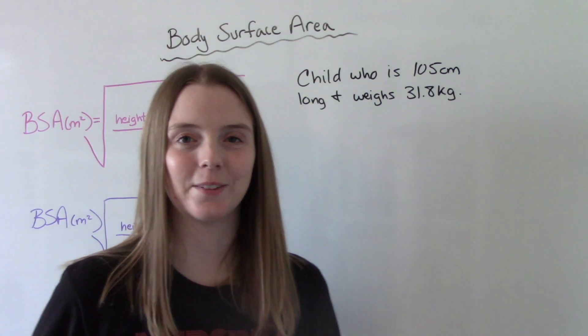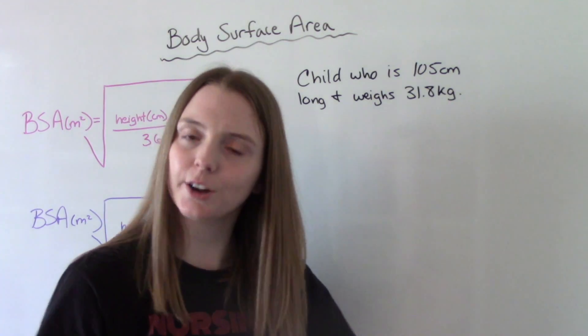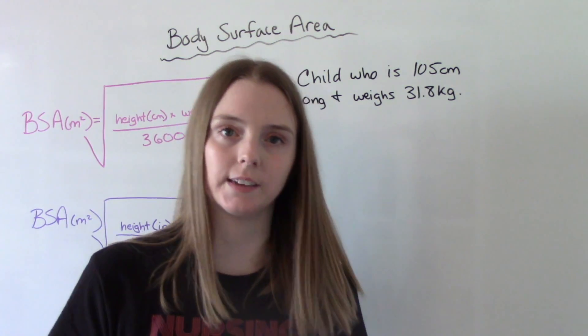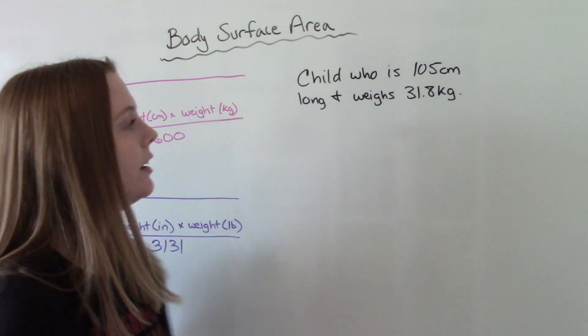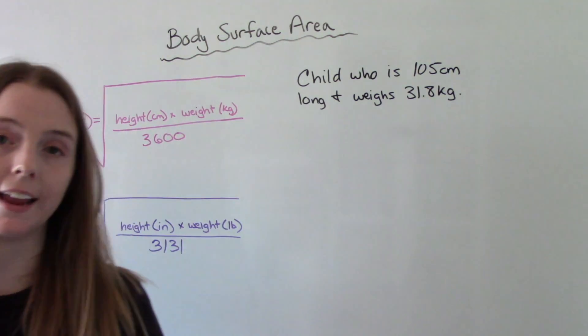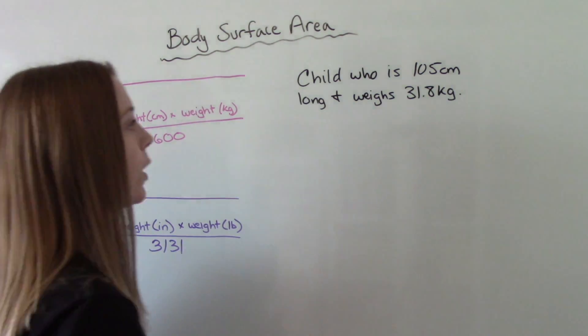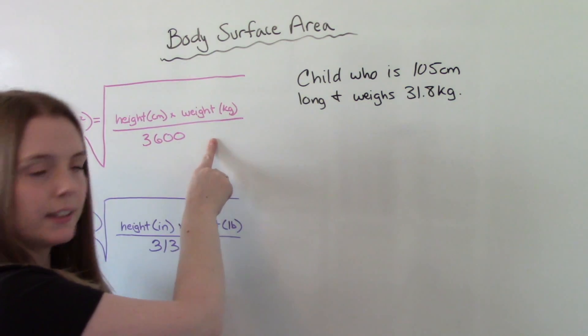Now let's do another one. Are we getting the hang of it yet, right? These aren't hard as long as you know these formulas. So we have a child who is 105 centimeters long and weighs 31.8 kilograms. So we're going to use this equation, this formula.